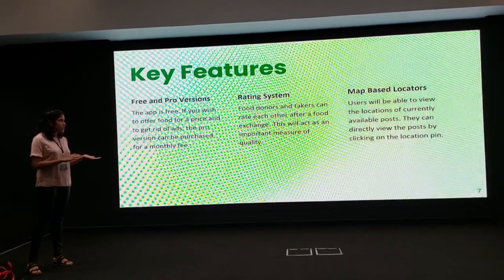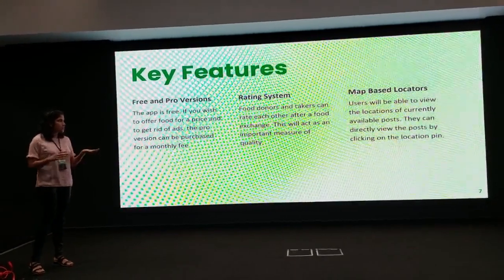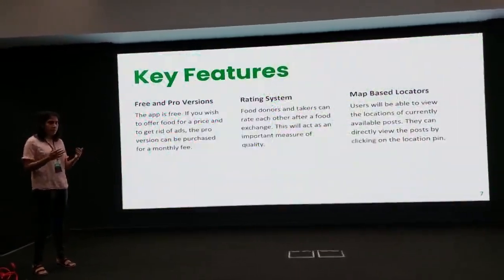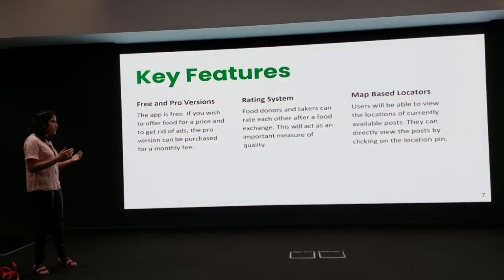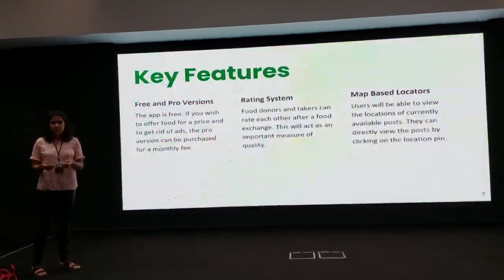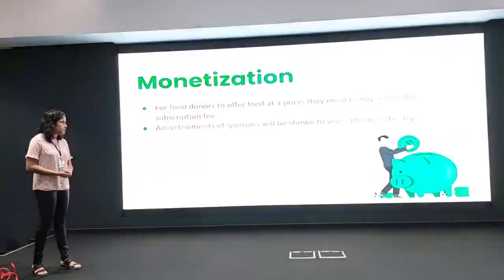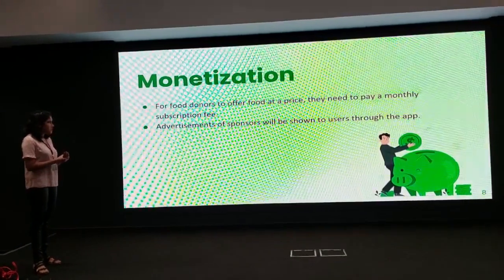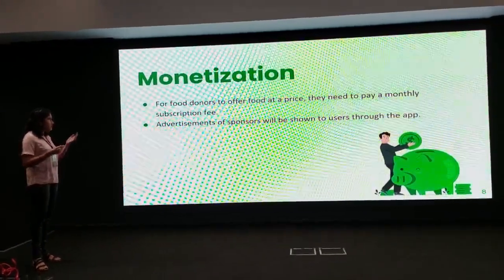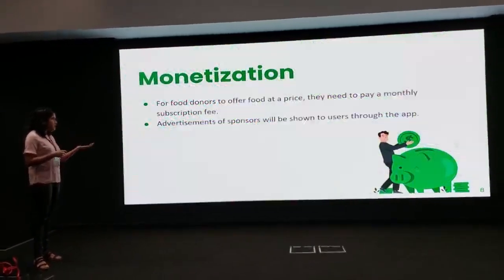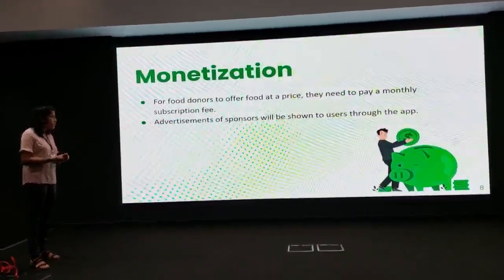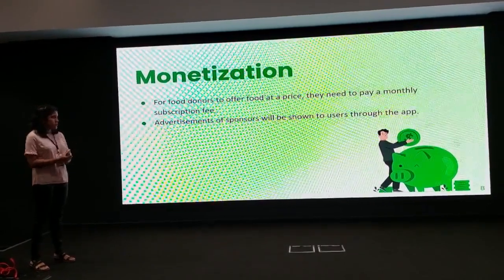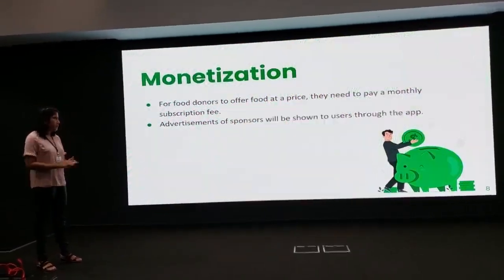We also use map-based locators, where users can view the locations of currently available posts on a map and directly view posts by clicking on the location. Our primary source of monetization will be the monthly subscription fee for the pro version, and advertisements from sponsors will be shown to users through the app.